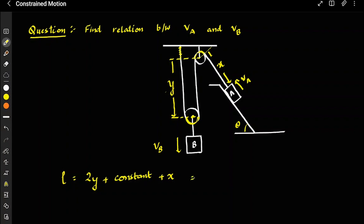I've assumed VA and VB moving in the same direction, so they will share the same sign convention. Observe that y is increasing when B moves in its direction, and then x will be decreasing accordingly. Differentiating: the left-hand side is 0 (constant), equal to 2 times dy/dt plus dx/dt. Since y is increasing and x is decreasing, we write 0 = 2(dy/dt) − dx/dt.